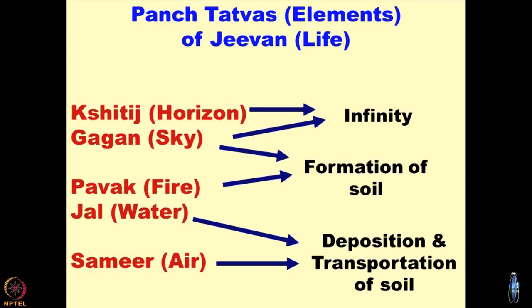You must have heard about the Panch Tattvas — the five elements of life. Shitej is horizon, Gagan is sky, Pavak is fire, Jal is water, and Samir is air. The interplay of all these five elements creates the entire geomechanics. When we were kids we were taught all these things, but when we became professionals we forgot them — and that is why we are unable to handle the situation properly.